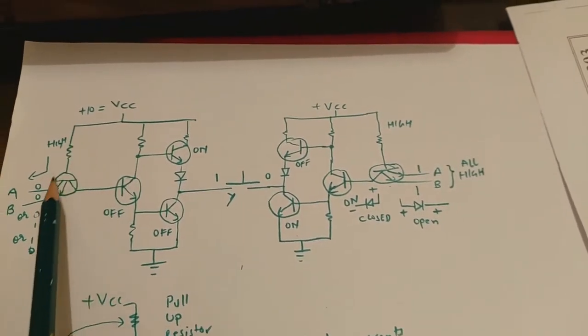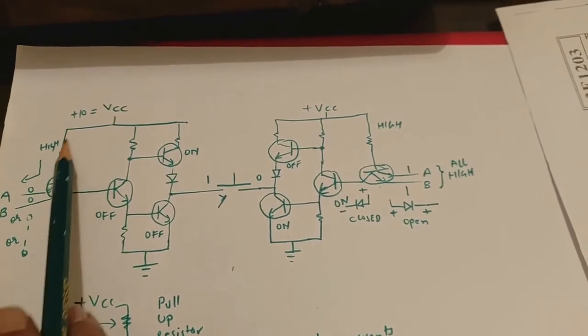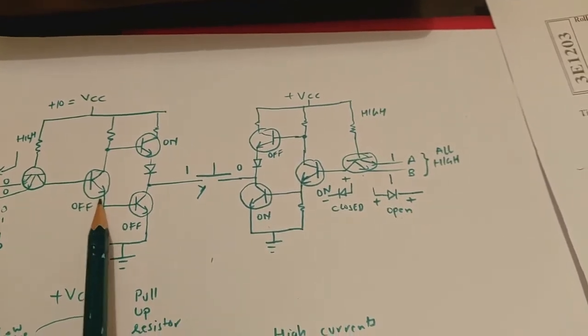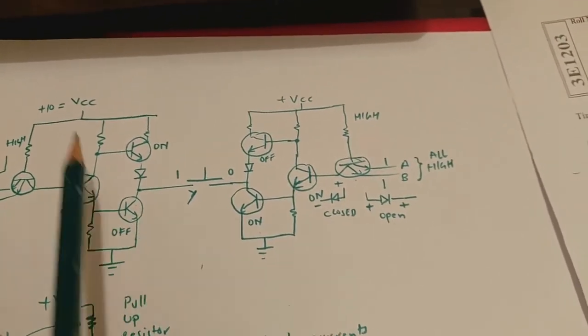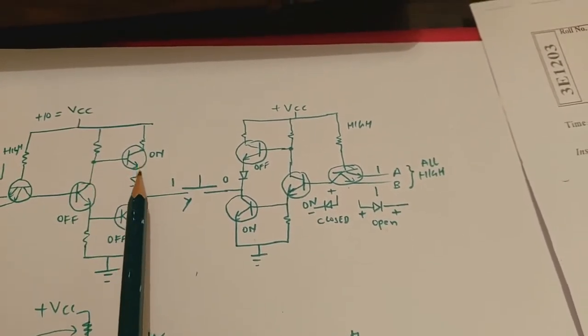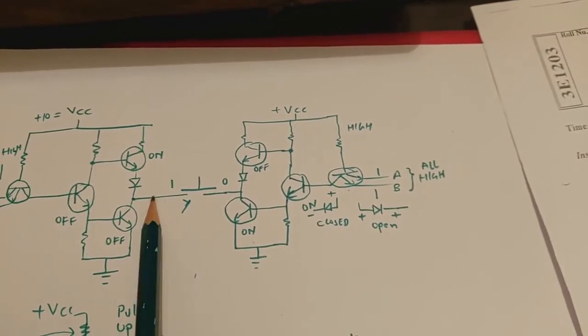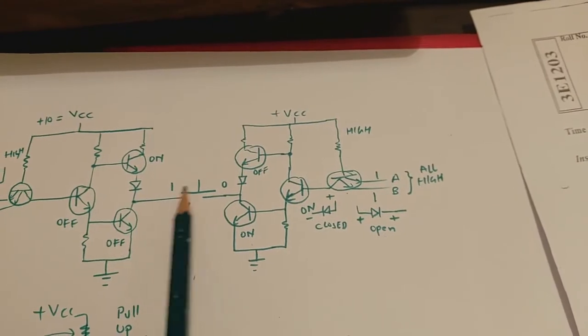Then this will be high and all the current will drain out from here, so there will be no current here. So this transistor will be off, this will be off, both are off. Then this will be biased as on and then this pull-down resistor will pull the high voltage and give a high voltage here.